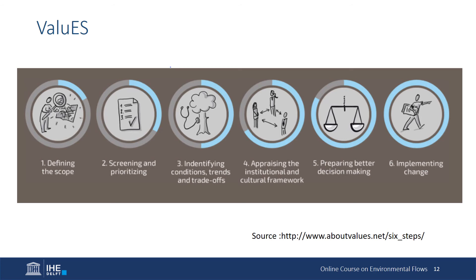The steps in the guide should be adapted to the local context. The first step is to define the scope — establishing the objectives for the assessment and designing the process for engaging stakeholders. The second step is screening and prioritizing to define what ecosystem services are relevant to the development being discussed and to the beneficiaries. The focus is to identify risks and opportunities. The next step is to identify conditions, trends, and trade-offs that might occur among different ecosystem services when different options are explored.